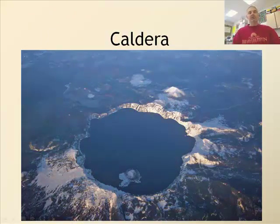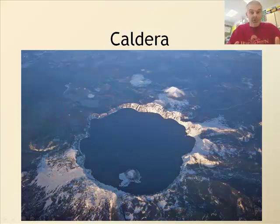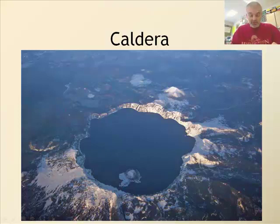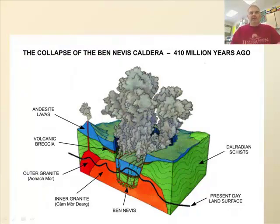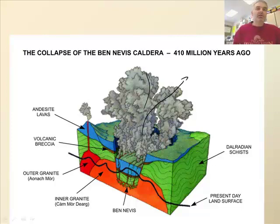A caldera forms when a large composite volcano like Mount St. Helens explodes and empties the magma chamber. Then there's nothing to hold the top of the mountain, so it collapses, forming a huge hole in the ground. Crater Lake in Oregon is a classic example — it formed when Mount Mazama blew up and collapsed. The top filled with water over many years and has no outlet, giving it that beautiful blue color.